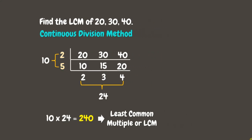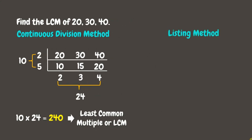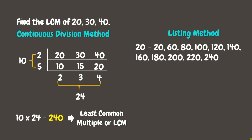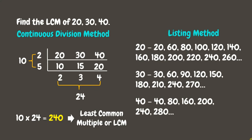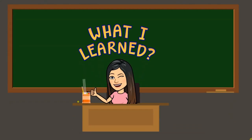Now, to check, we can use the listing method. The multiples of 20, the multiples of 30, and the multiples of 40 show that the least common multiple is 240. What a great lesson! Here are the things that you learned today!